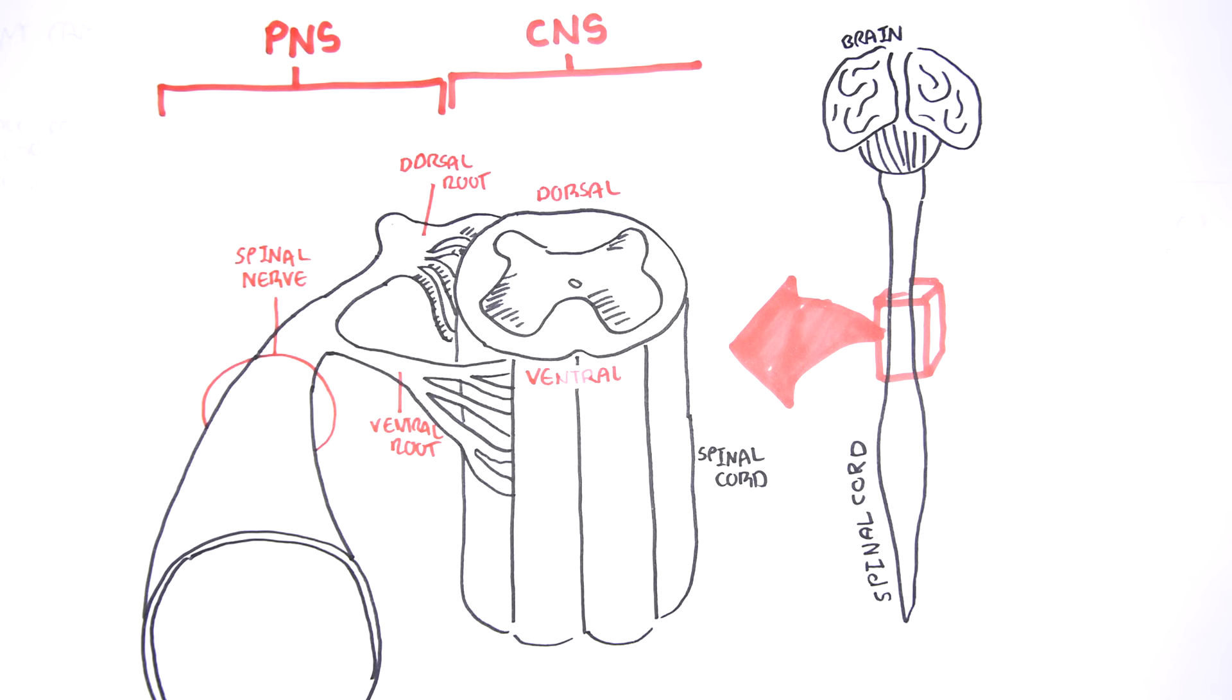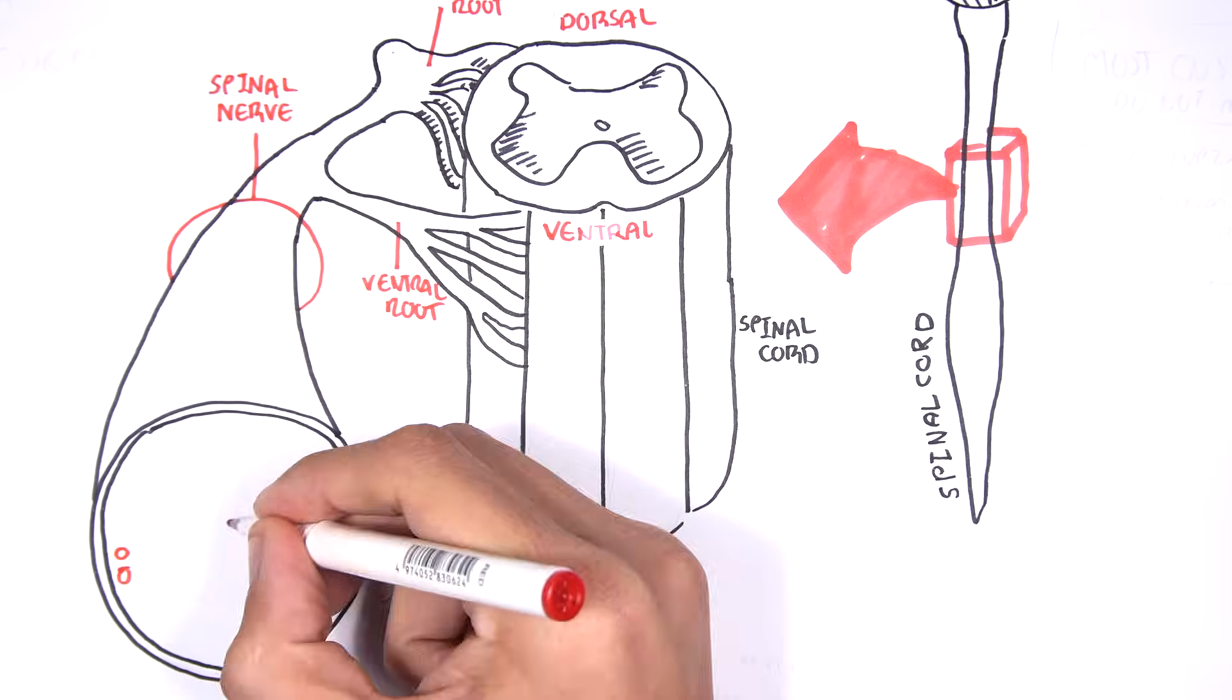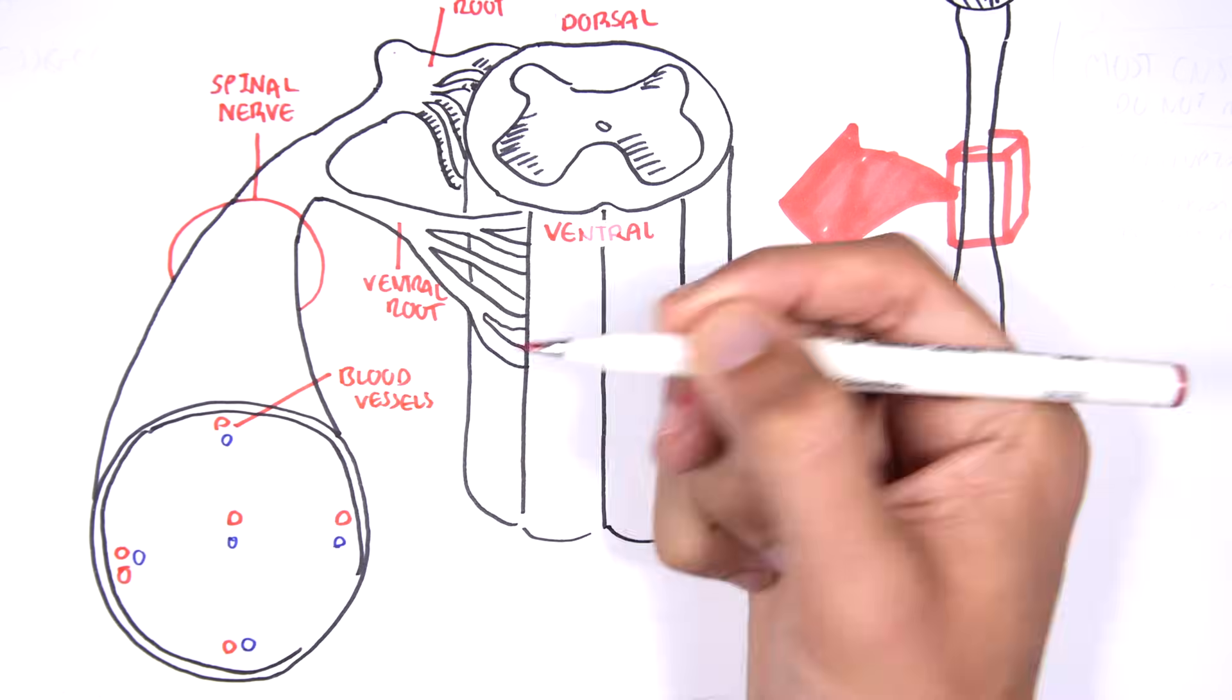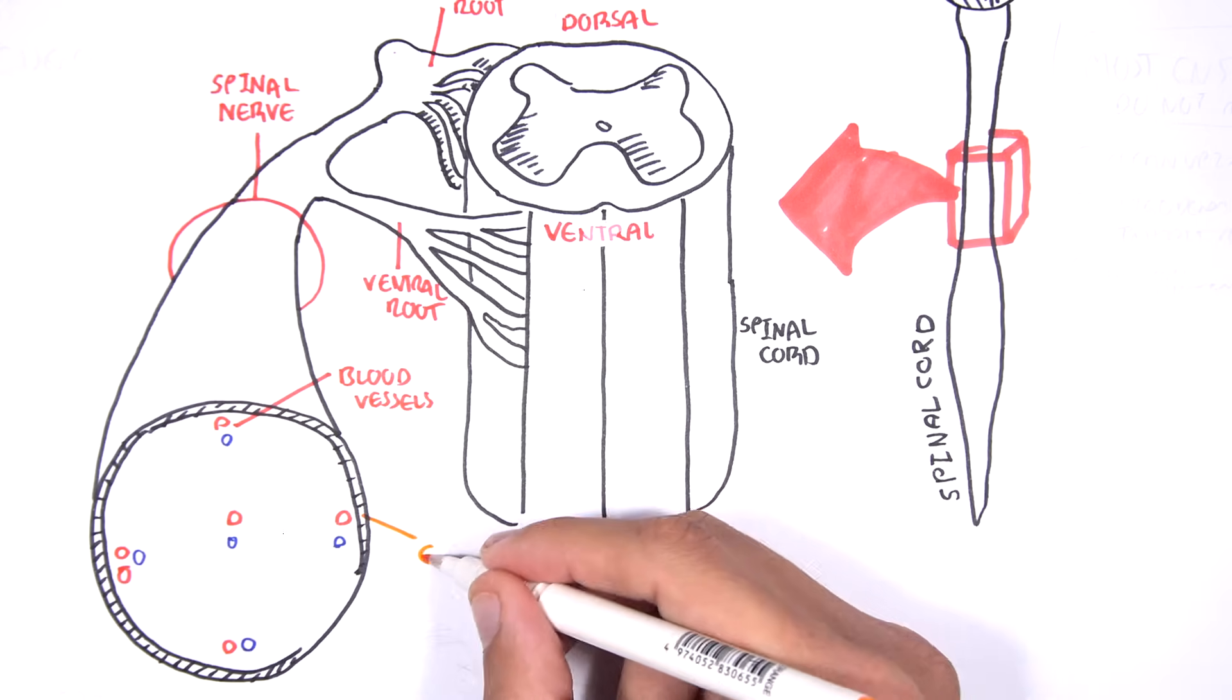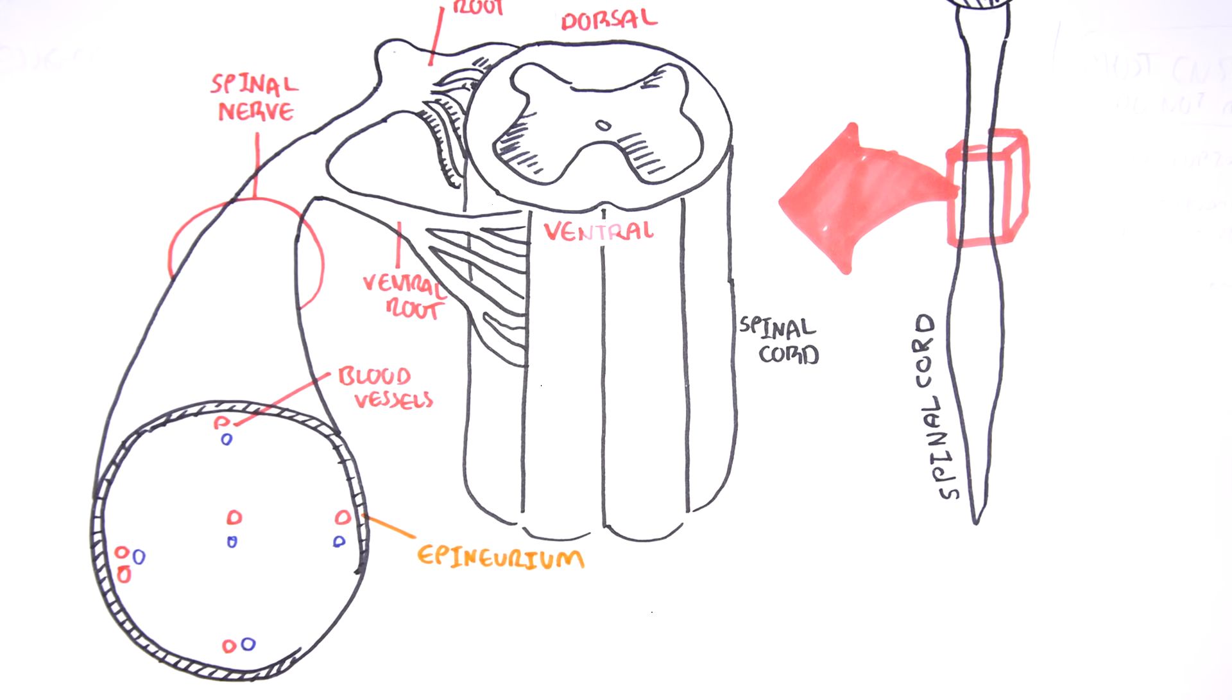In the spinal nerve, if we look at a cross-section of it, we can find blood vessels, veins and arteries. Surrounding the nerve, in this case the spinal nerve, we have a sheath called the epineurium.